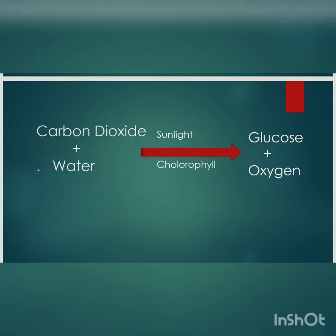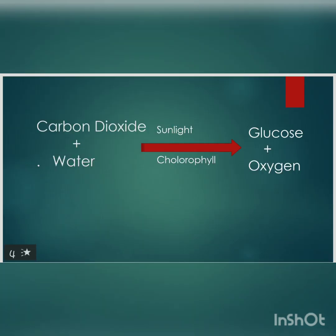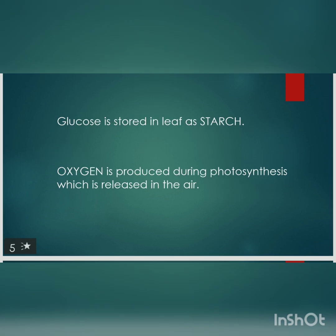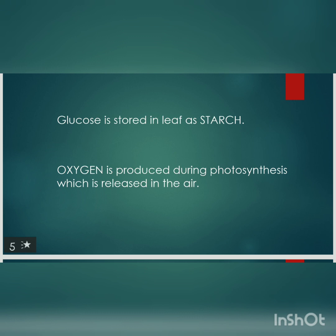Carbon dioxide and water react in the presence of sunlight and chlorophyll to form food for plants as glucose and oxygen. Glucose is stored in leaves as starch, and oxygen produced during photosynthesis is released into the air.